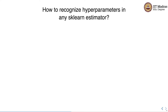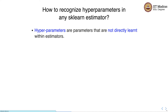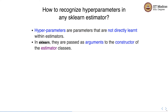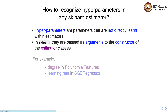Before performing hyperparameter tuning we need to recognize the hyperparameters in any sklearn estimator. Hyperparameters are those parameters that are not directly learned within the estimator. In sklearn they are passed as arguments to the constructor of the estimator classes. For example, degree in polynomial features is a hyperparameter, and in the same way learning rate or penalty in SGD regressor are also examples of hyperparameters.